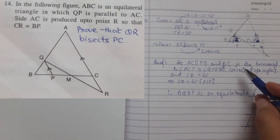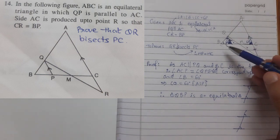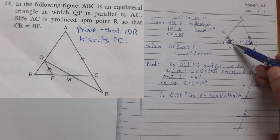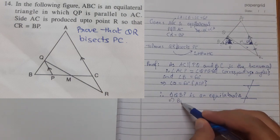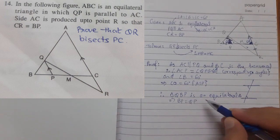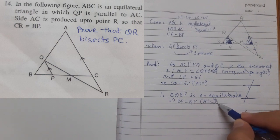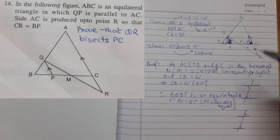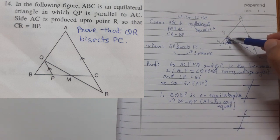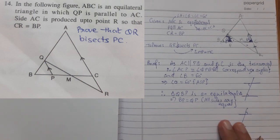If a triangle is equilateral, all its sides are also equal. Therefore BP equals QP, since all sides are equal.